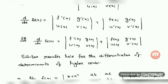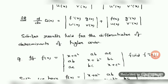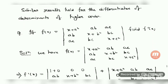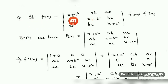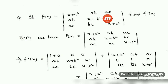Similarly, we can do the differentiation of higher order determinants. For a third order 3×3 determinant, also the procedure will be the same — there we have the sum of three determinants. Let me give an example. If f(x) equals the determinant with first row elements (x + a²), a·b, a·c; second row a·b, (x + b²), b·c; and third row a·c, b·c, (x + c²), you have to find out f'(x).